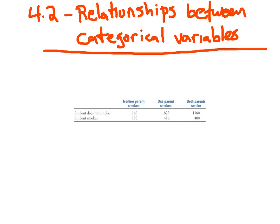So we're going to begin with section 4.2, relationships between categorical variables. And I'm beginning with 4.2 rather than 4.1 because I think it is a little bit easier than section 4.1.